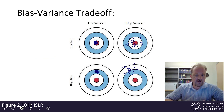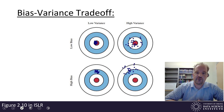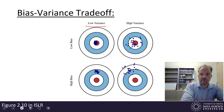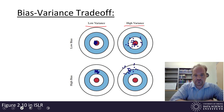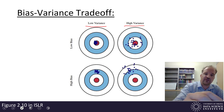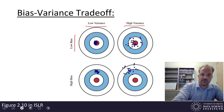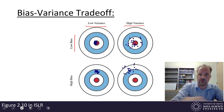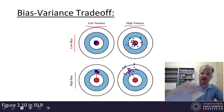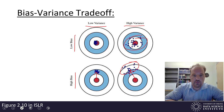A standard way to visualize this is with four targets. The left-hand column represents low variance — hits are tightly grouped — and the right-hand column represents high variance — hits are more spread out. The top row corresponds to low bias, meaning the average of our hits is close to center. The bottom row corresponds to high bias — the average prediction is off target by some preset amount. Bias describes how far off we are on average, and variance describes how spread out our model outputs would be.